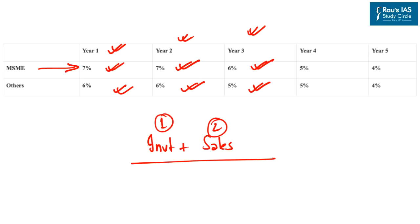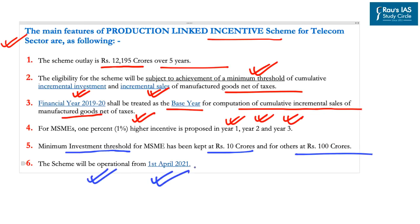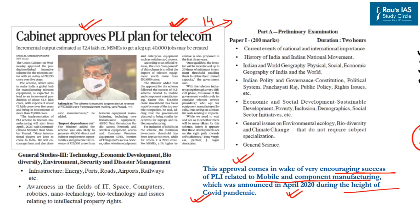For UPSC purposes, the key point is that the PLI scheme involves both incremental investment and incremental sales. The minimum investment threshold for MSMEs is Rs 10 crores and for other companies Rs 100 crores. The scheme is operational from 1st April 2021. This topic is covered under economic and social development in prelims and under GS Paper 3 with respect to infrastructure and technology development in mains.